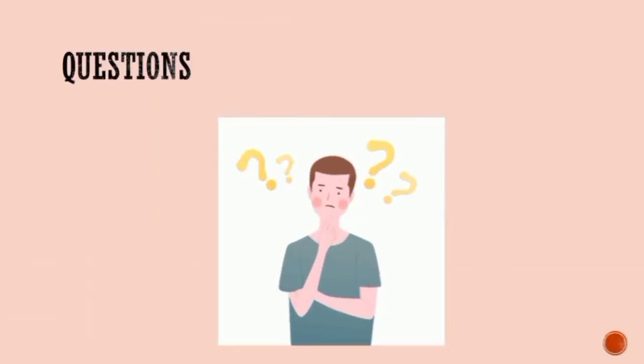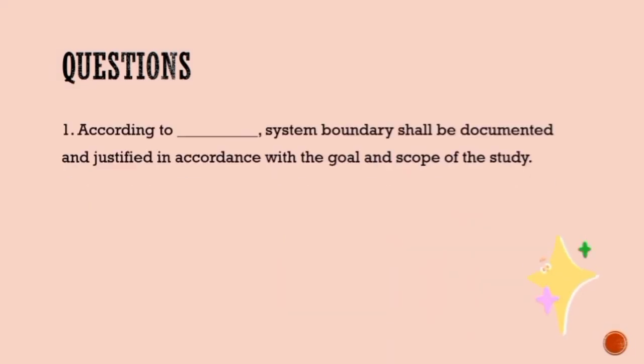Now we come to quiz time. There are questions based on the content mentioned before. Question 1: According to underscore, system boundaries shall be documented and justified in accordance with the goal and scope of the study.